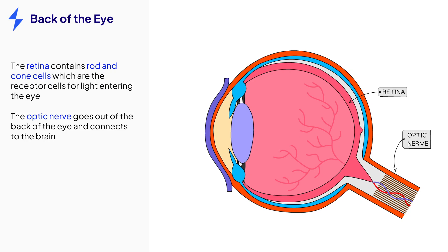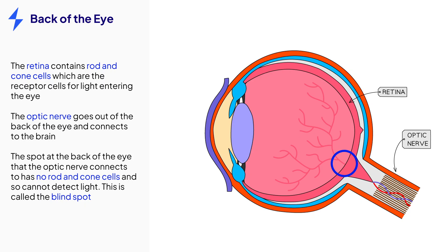The optic nerve is the bundle of sensory neurons that send the information being collected by the rod and cone cells to the brain. The space at the back of the eye that the optic nerve branches out from does not contain any light receptor cells and is therefore called a blind spot. If light entering the eye hits this spot, it is not detected.